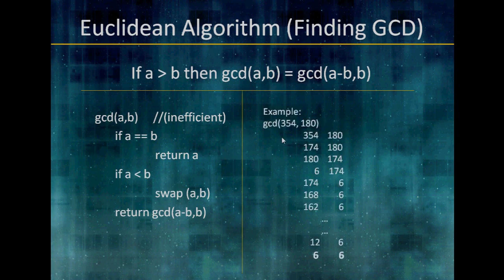Here's an example: GCD of 354 and 180. Here A is greater than B, so we don't swap, we just subtract 180 from 354. We get 174 and 180. Now A is less than B, so we swap. Then we subtract: 180 minus 174, 6 and 174. A is less than B, we swap. From there we're just going to keep subtracting 6, subtracting 6, all the way down until we get 6 equals 6, A equals B, we return A. So 6 is the GCD of these two numbers.